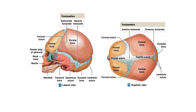The bones of the skull are separated from each other by sutures. The frontal bone is separated from the parietal bone by the coronal suture. The parietal bone is separated from the temporal bone by the squamous suture. The parietal and occipital bones are separated by the lambdoidal suture. The two parietal bones are separated from each other by the sagittal suture.